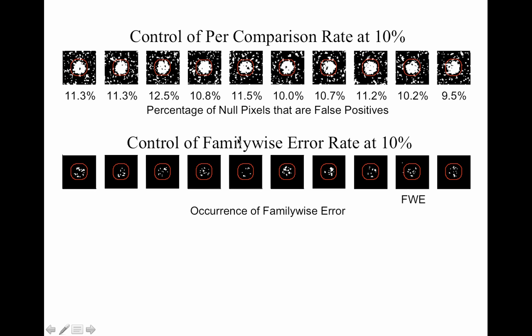Family-wise error rate controls the probability of any false positive. At 10% FWER, only one out of 10 studies will have any false positives. Marching through the studies, there are no false positives until one particular study shows a false positive — that's our family-wise error. So one out of 10, or 10%.